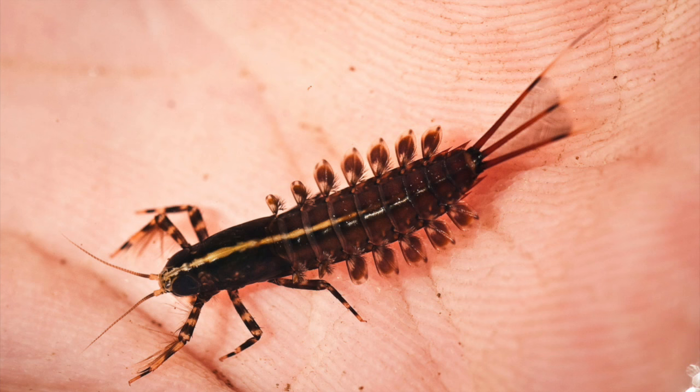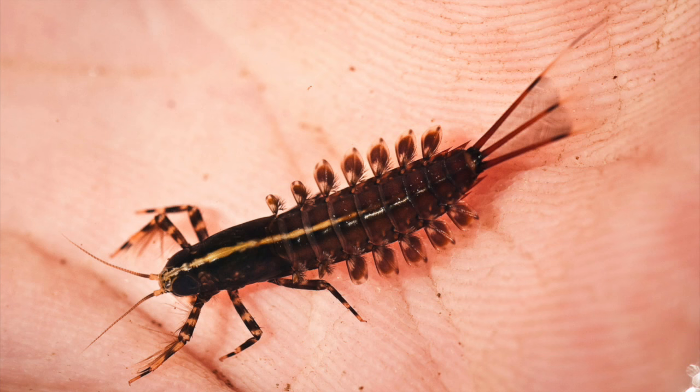My vise is set up and today we're going to be tying an Isonychia nymph. Right now the Isonychias are coming off here in Michigan and I thought it would be a great tutorial to start doing. Now this is one of the nymphs that is super easy to fish as well. You don't have to get a dead drift presentation with an Isonychia nymph.